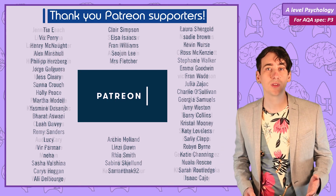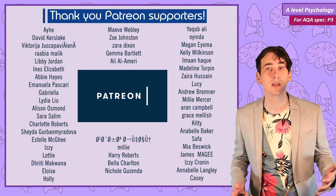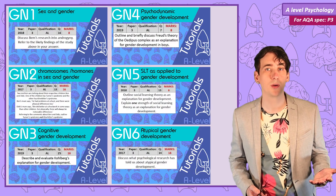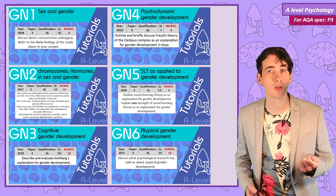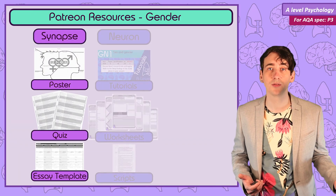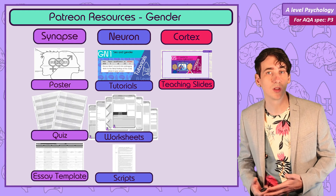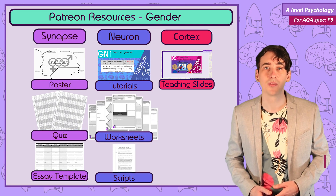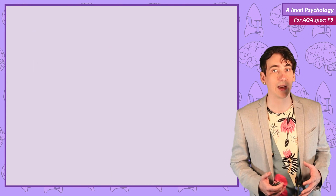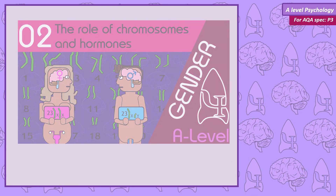I want to thank everyone who supported this channel over on Patreon during the development of the gender unit. You help make the development of these free A level videos possible. If you're a PsychBoost patron at the Neuron level and above you can access 6 bonus gender tutorial videos over on psychboost.com, where I'll talk you through a model answer for the exam questions and some general exam tips based on the exam reports. But for everybody else don't forget to subscribe so you don't miss the videos released right up to exams. See you in the next PsychBoost video — have a great week.